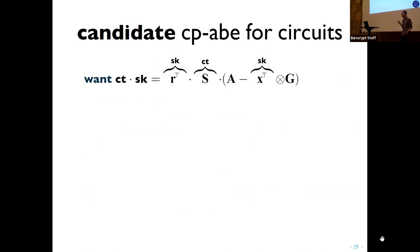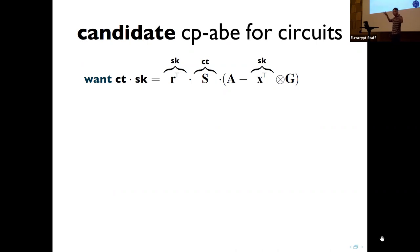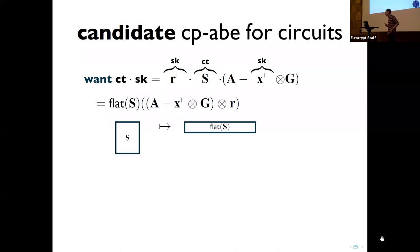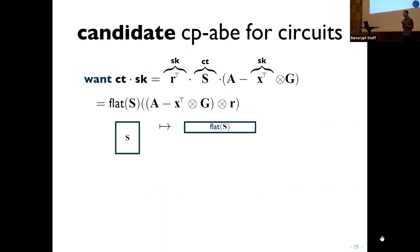To implement this, we want the product of the ciphertext and secret key to be of the form R times S times (A minus x·G). The difficulty is that S, which depends on the ciphertext, is sandwiched between two terms depending on the secret key. We take a different approach and use a matrix identity related to vectorization: instead of working with matrix S, we work with the flattening of S — a wide row vector formed by concatenating every row of S. This moves S to the left-hand side and R to the right-hand side with an extra tensor, cleanly decomposing into a ciphertext part and a secret key part.